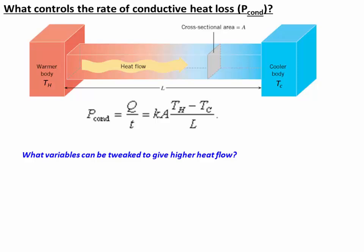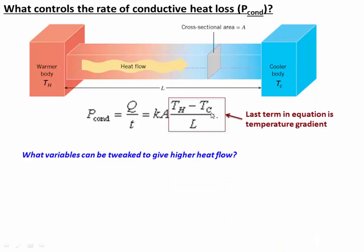The steepness of the thermal gradient is actually one of the main controls on how much heat energy can be lost through some given area A. The heat flow is given by an equation: we've got the conductivity K, the area A, and then a last term which is actually the temperature gradient — that's the difference in temperature between the hot and cold divided by the length L.